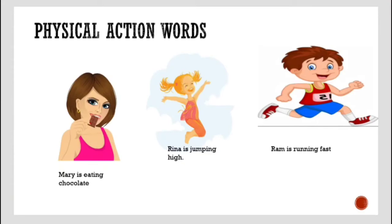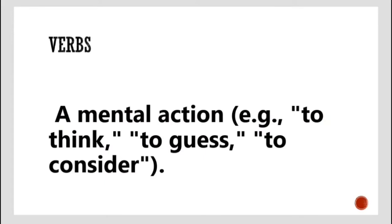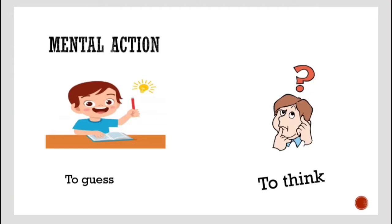The second type of verb is mental action. Examples: to think, to guess, to consider. Mental action means if you are thinking or sitting and guessing. For example, in the image, a teacher has given a question — one boy guessed the answer, while another boy is still thinking what the answer can be. So these are all mental actions, which use our brain, and they are also known as verbs.